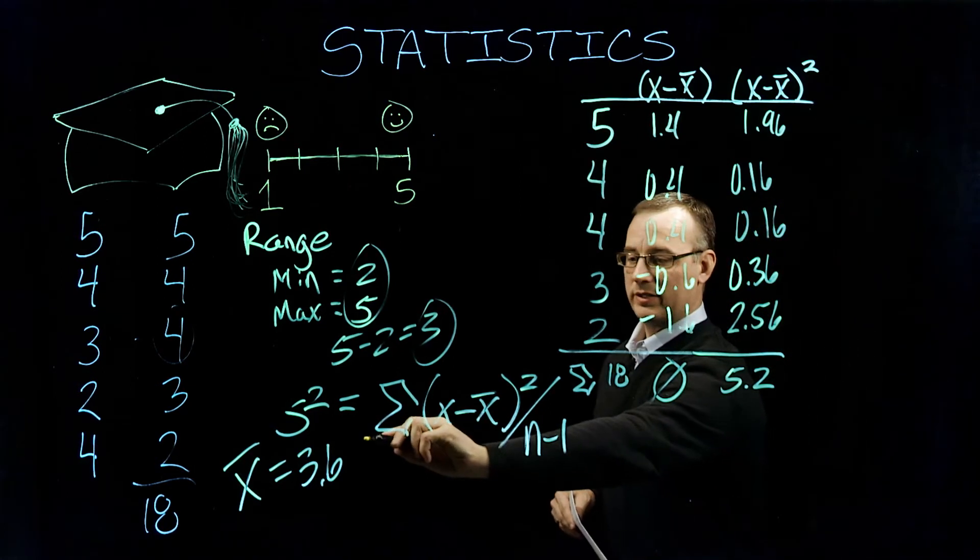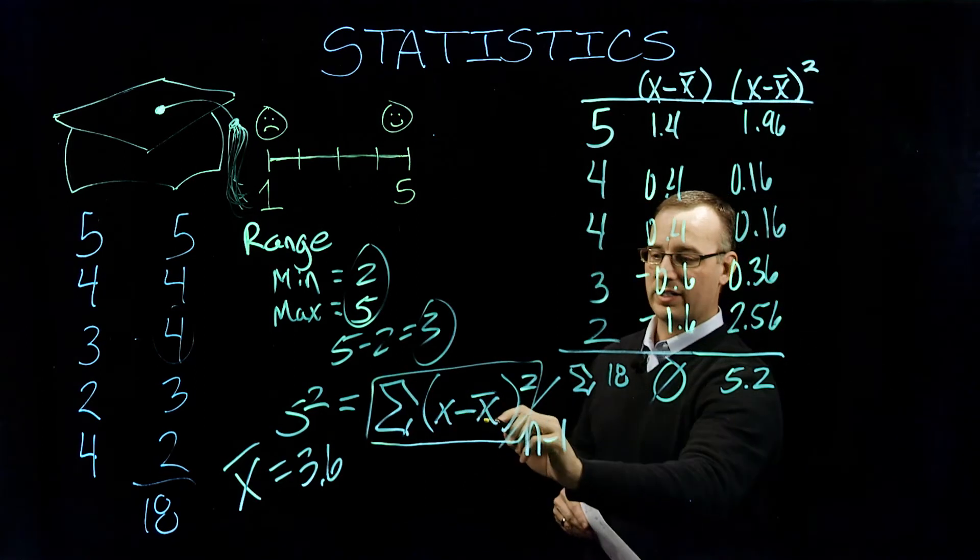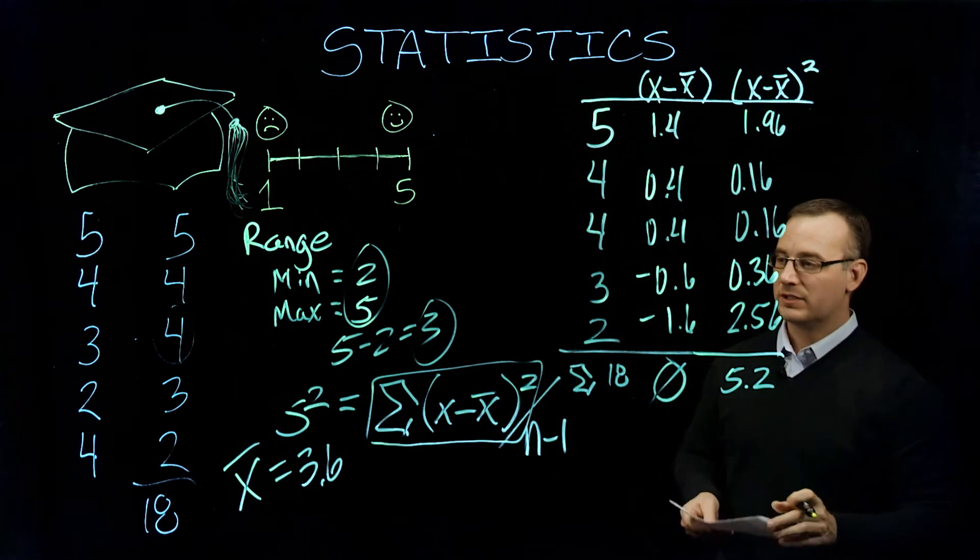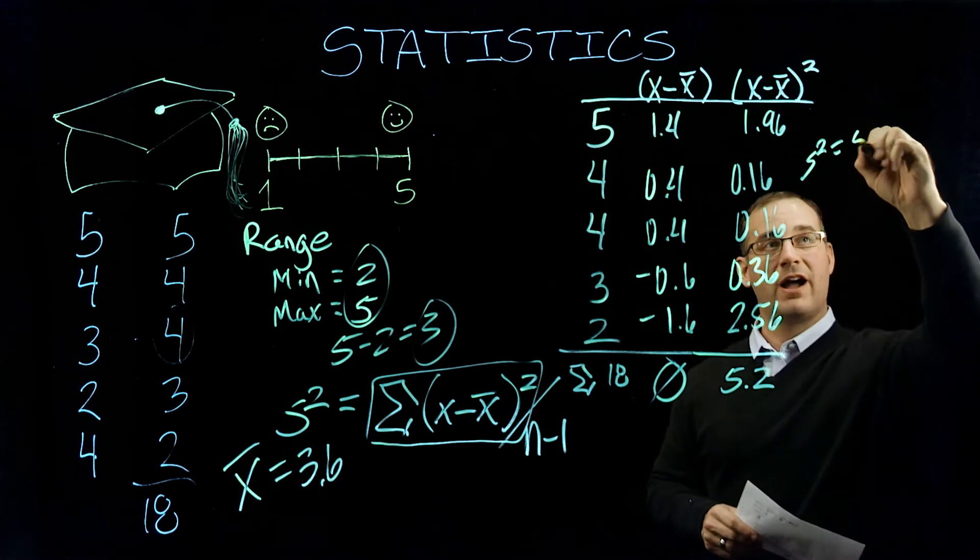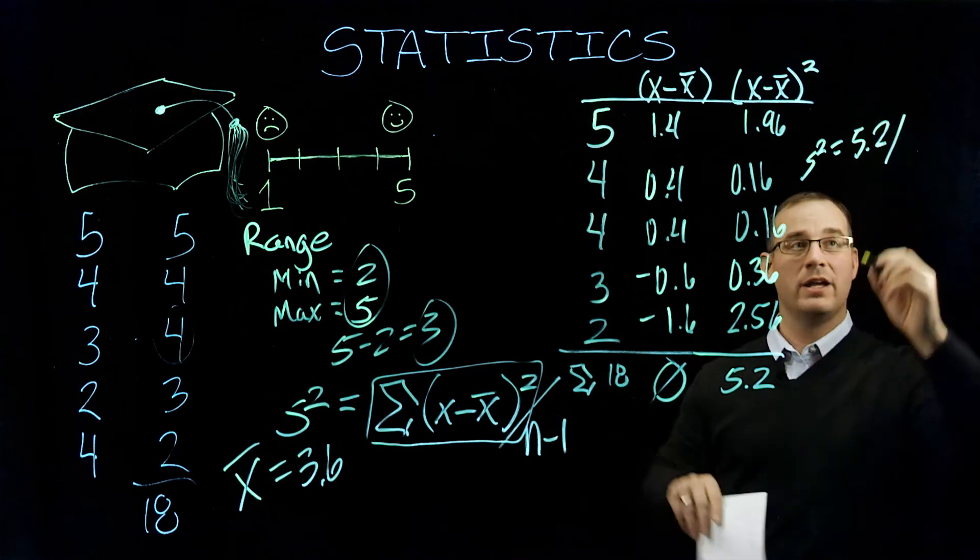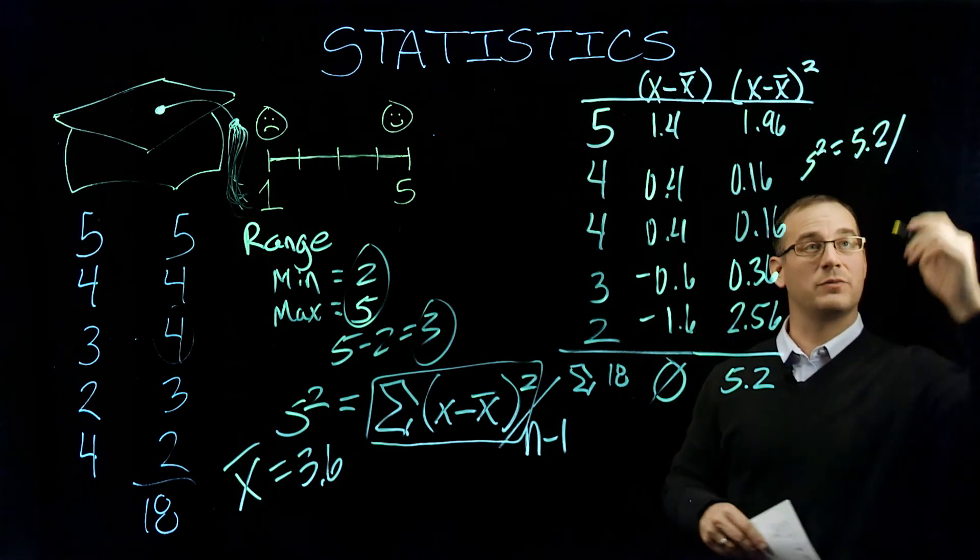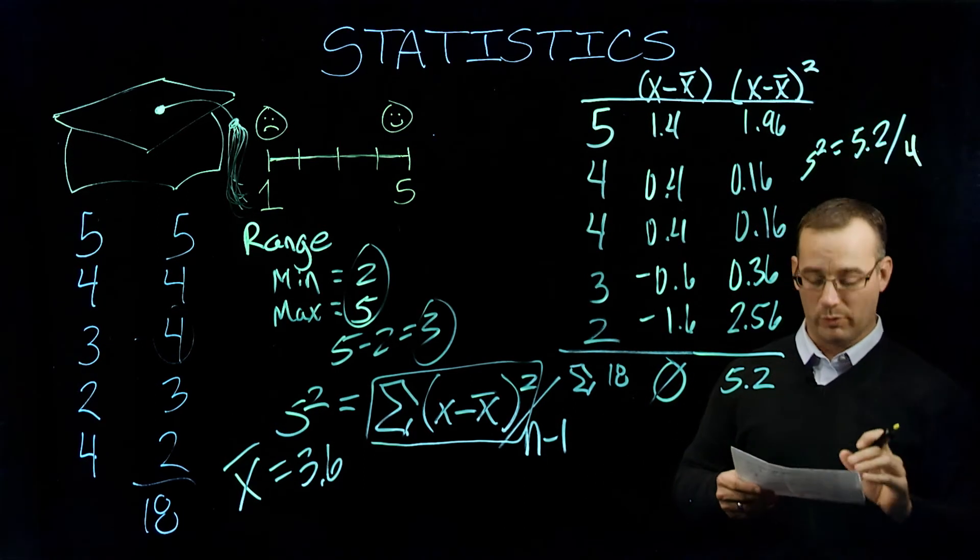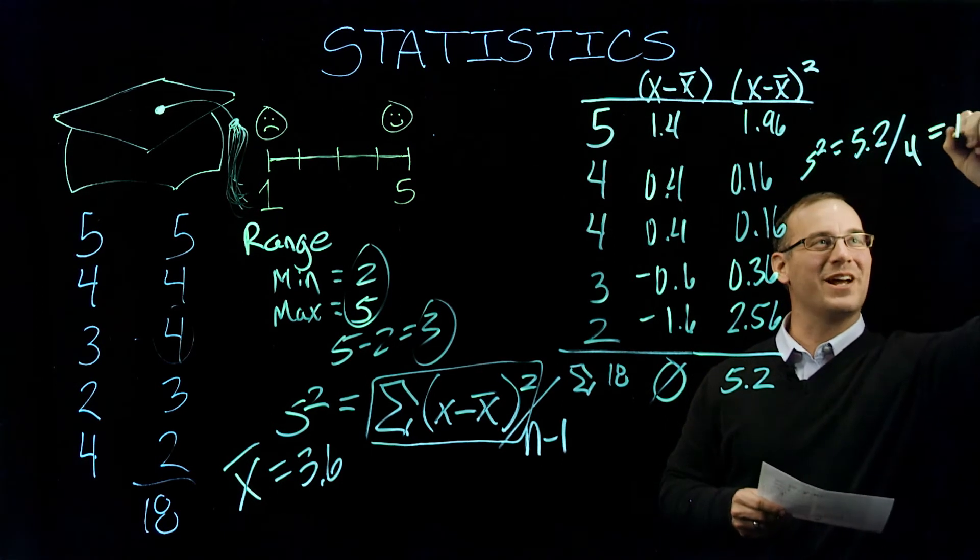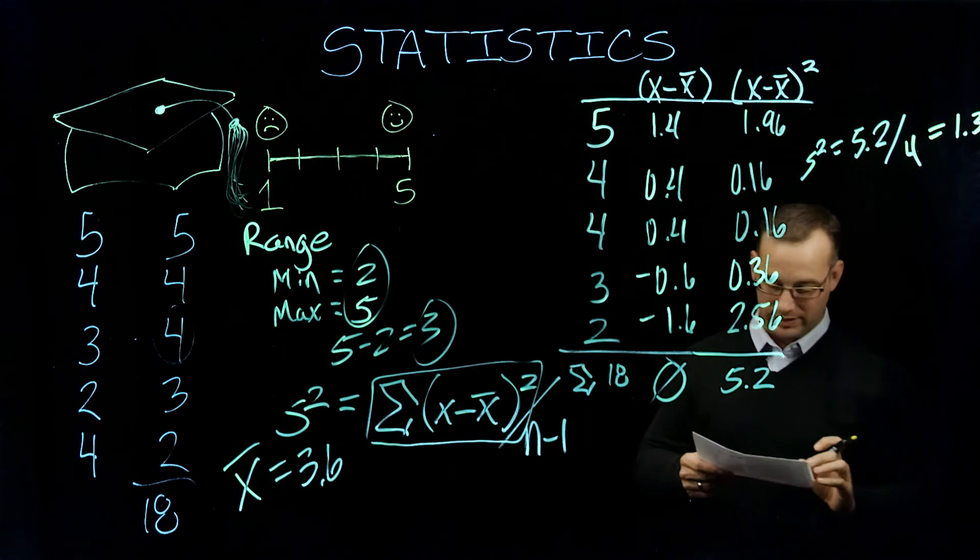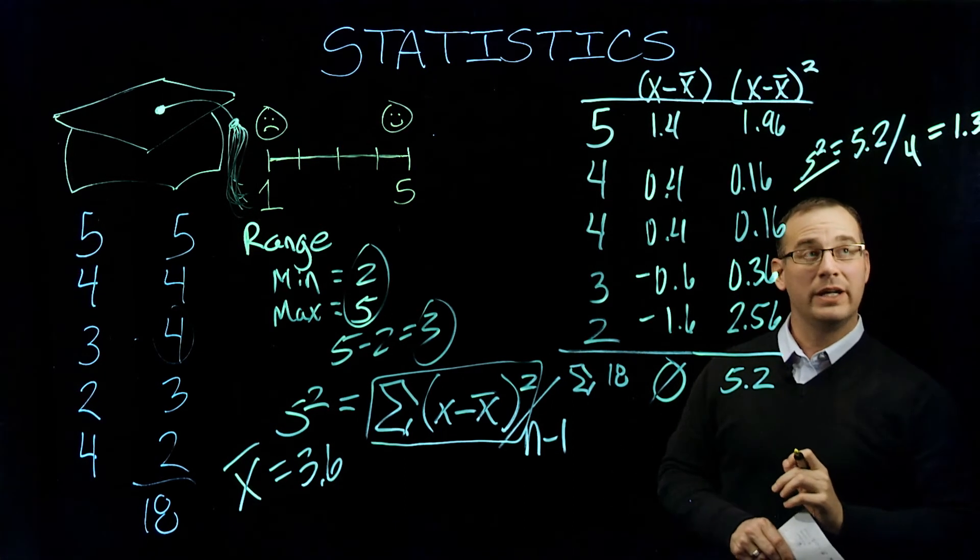That 5.2 is going to be this value right here - the sum of our differences from the mean squared. So in essence, in order to be able to calculate S squared, what we need is that 5.2 value divided by our n minus 1. In this case, our n is 5 minus 1 would be 4. So 5.2 divided by 4, if my math is correct, and you can check my math, we should get 1.3. So we would say that our variance or S squared value is 1.3.